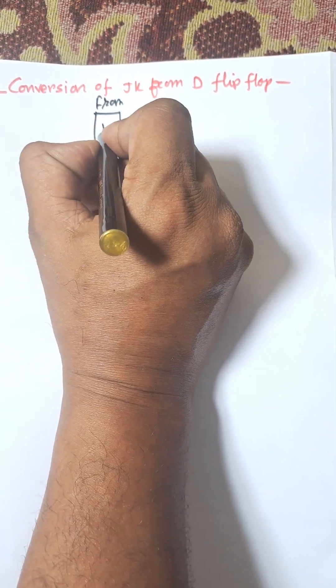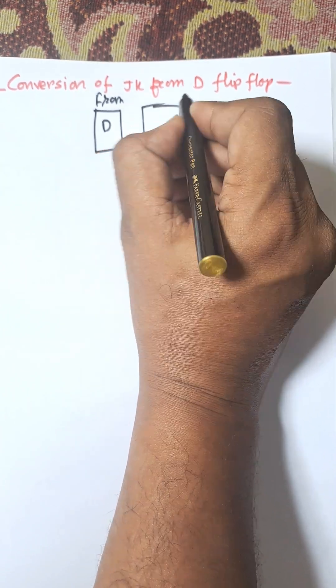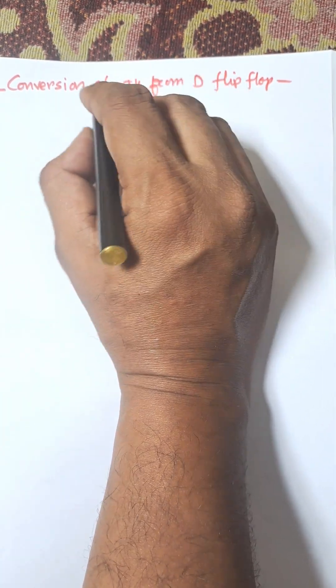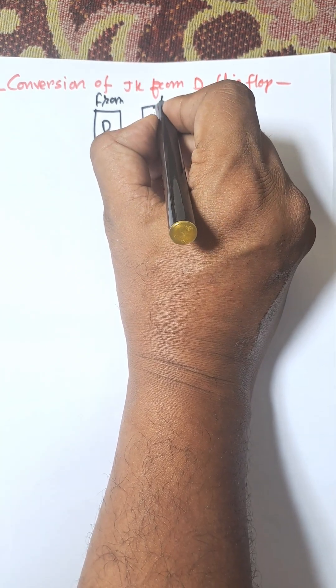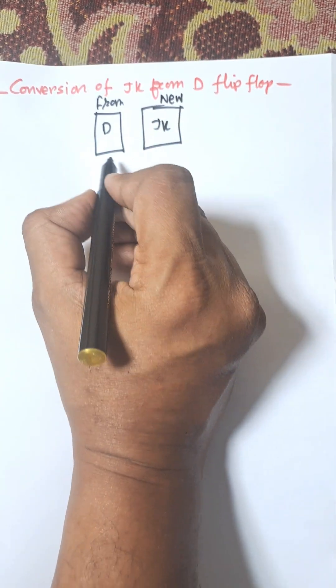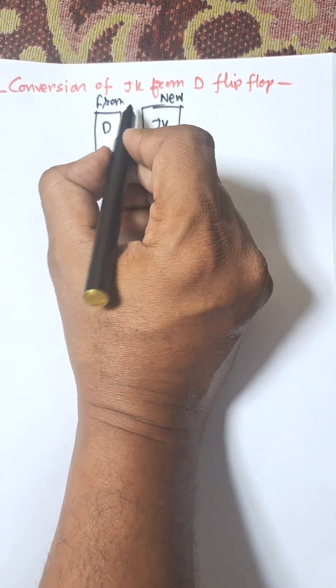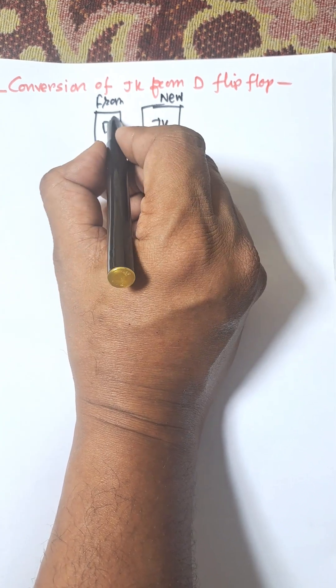This is from and we need to create the old one and then we need to create the new one that is JK. This is new and this is old. So we need to create JK from D.